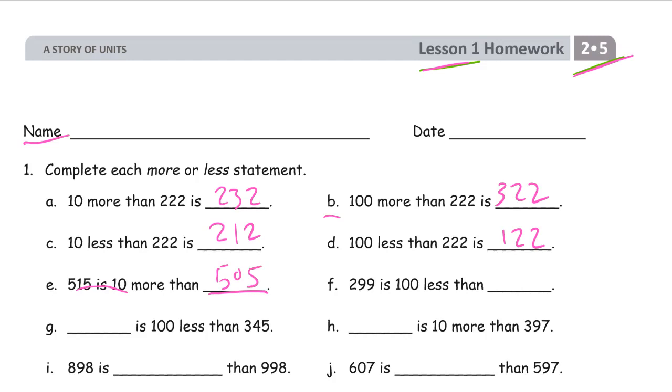299 is 100 less than... well, if 299 is less, then this number must be more. So that's 100 less. This has to be 100 more. 399.